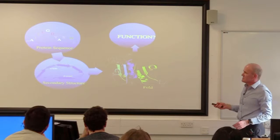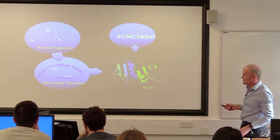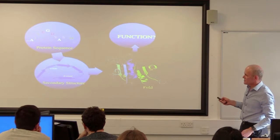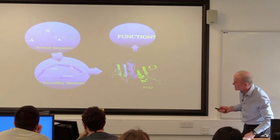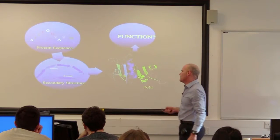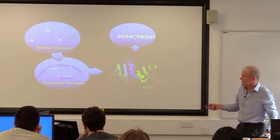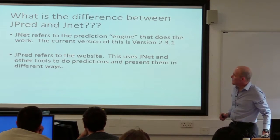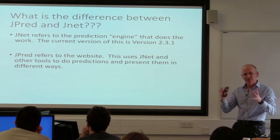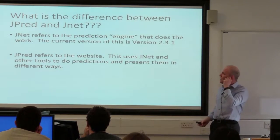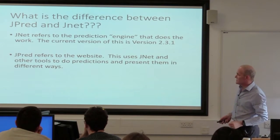This is where they are. So this is the kind of thing we've been dealing with. You've got a protein sequence, you're interested in the three-dimensional structure — this is a simplification of the structure and the function. You can predict alpha helices and beta strands, as we've talked about last week. So it's this step we're going to talk about: predicting helices and strands. J-Net is the engine — it's the prediction method used on a website called J-Pred. J-Pred is the website; J-Net is the kind of engine that does the predictions.